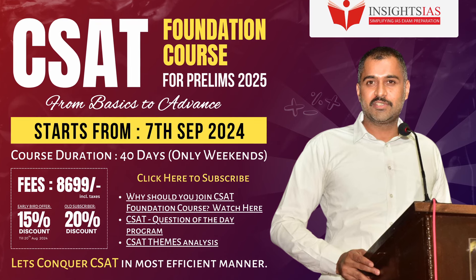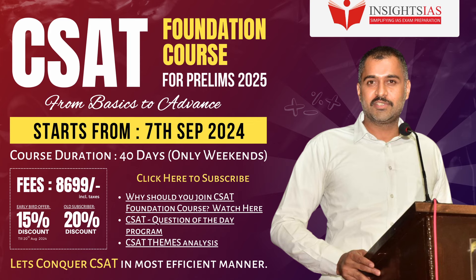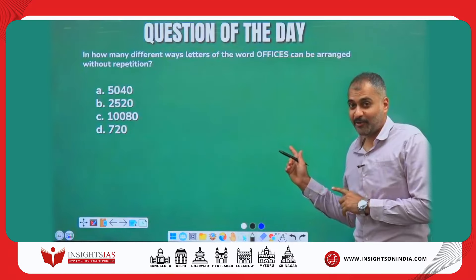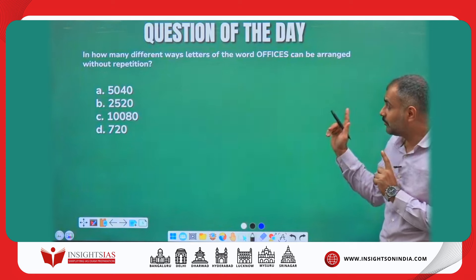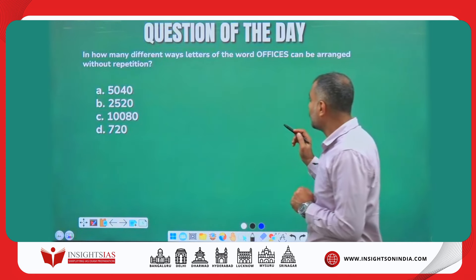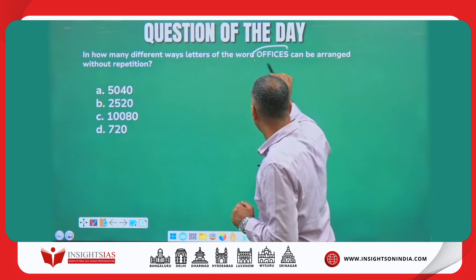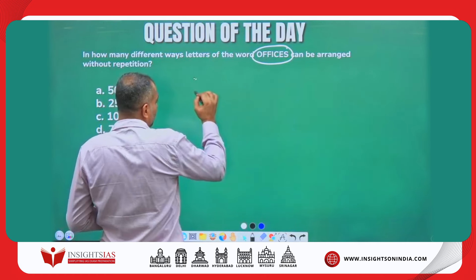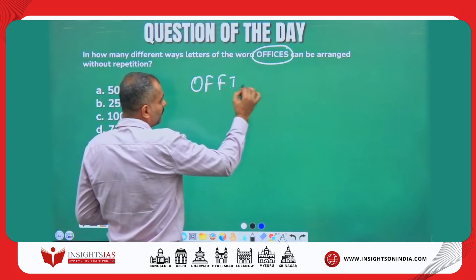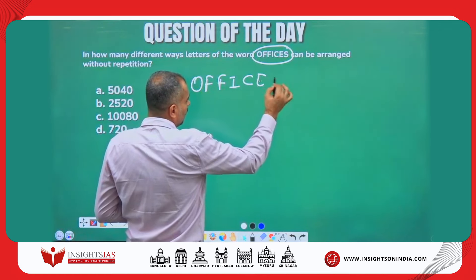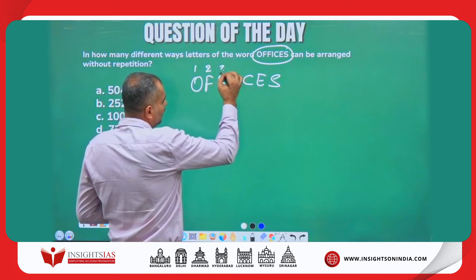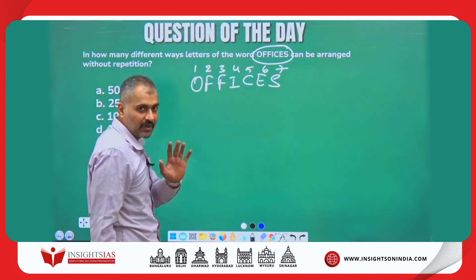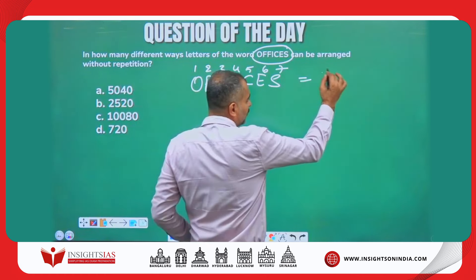Now a very similar question: in how many different ways can the letters of the word OFFICES be arranged without repetition? OFFICES has 1, 2, 3, 4, 5, 6, 7 characters. If there are 7 characters, the starting point is definitely 7 factorial.